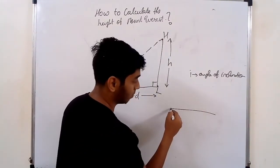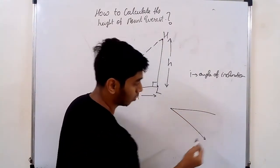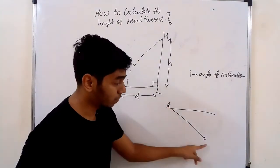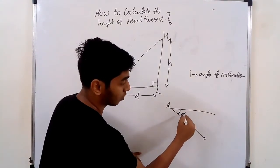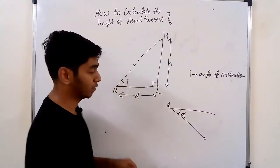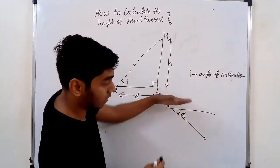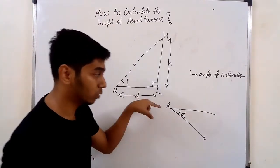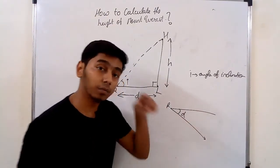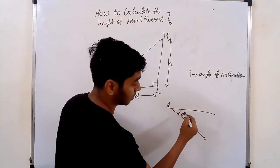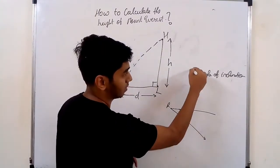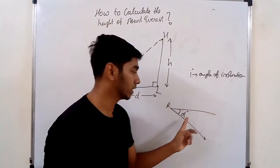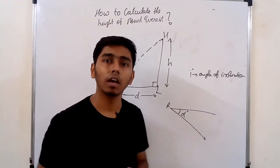Or if I'm looking downwards from a higher point with some angle, it is called the angle of depression — going downwards. So the angle with respect to looking straight, with which I'm looking downwards, is called D, which is the angle of depression. You'll be learning more on angle of inclination and depression in your higher standards.